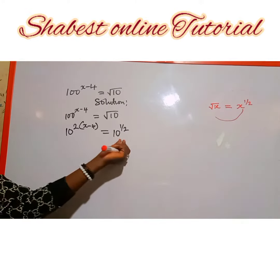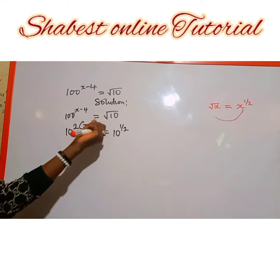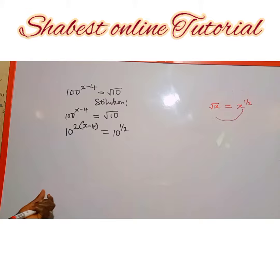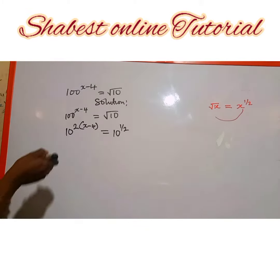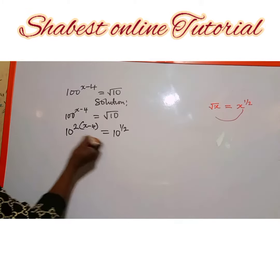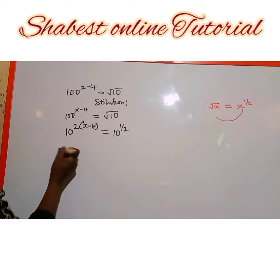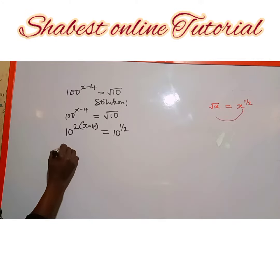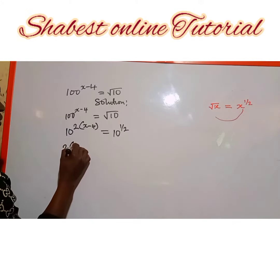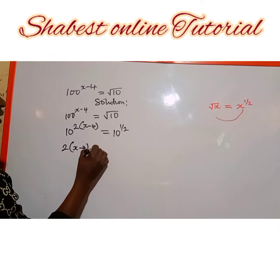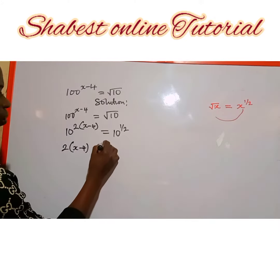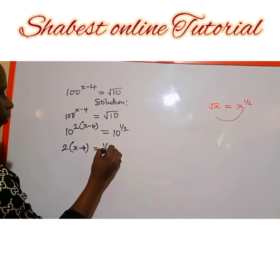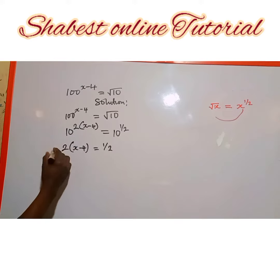Now if you've seen, both the left and the right hand side have the same base. So we are going to equate the exponents according to the law of indices. We can eliminate the bases and equate the exponents. The exponent on the left hand side is 2 multiplied into the bracket of s minus 4, which is equal to one half.